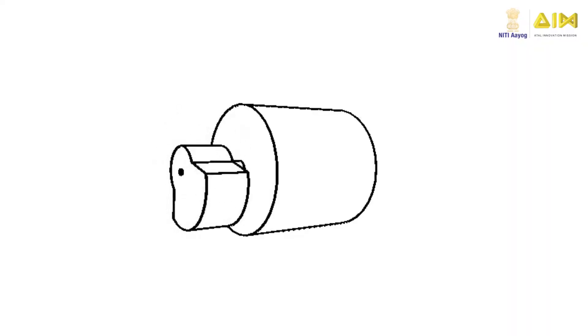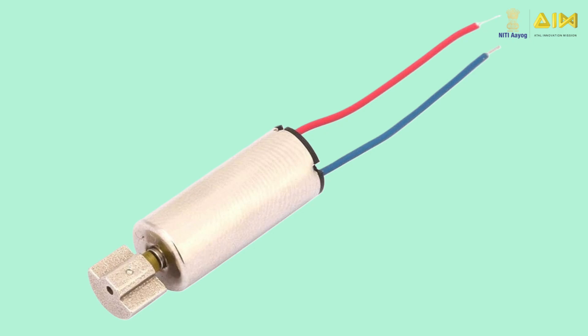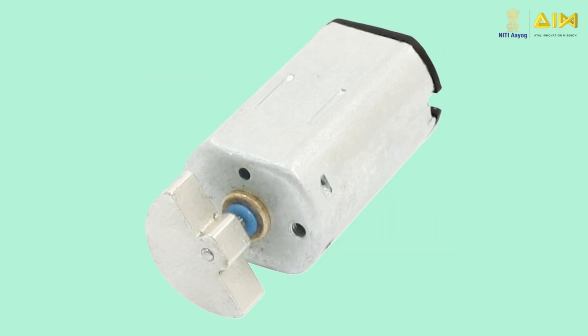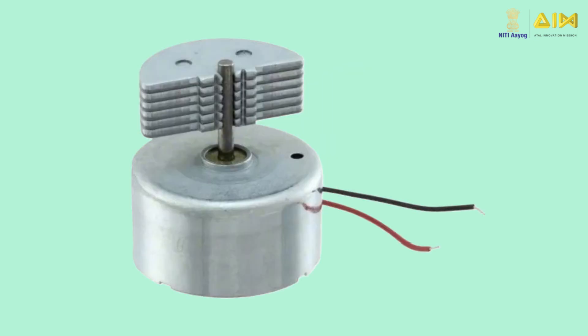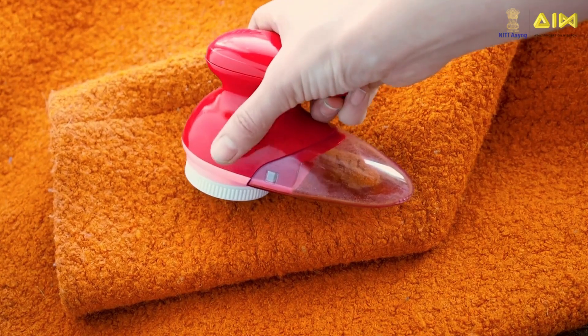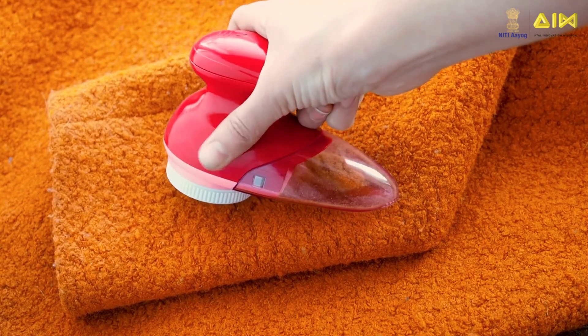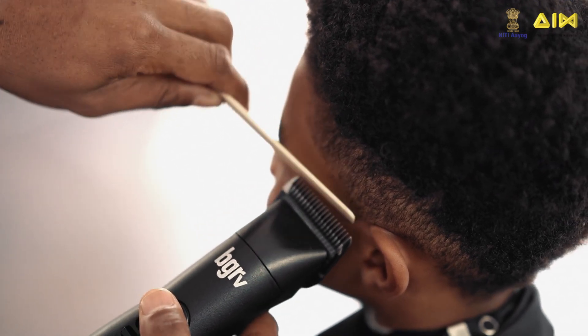Vibration motors come in two basic types: coin type or flat type, and cylindrical or bar type. They are also known as eccentric rotating mass or linear resonant actuator motors. Either the coin type or the bar type vibration motor is used depending on the size and desired operating characteristics of the product or application.